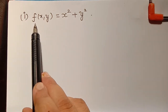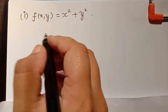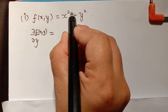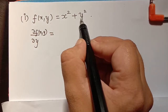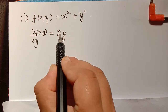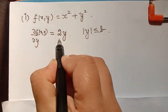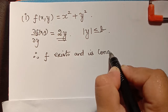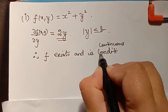Consider the first function: f(x,y) = x² + y². Let us find ∂f/∂y. Differentiating partially with respect to y, x² is treated as constant so its derivative is 0, and the derivative of y² is 2y. We observe that the partial derivative equals 2y, which is continuous since y is bounded — modulus of y ≤ b. Therefore, ∂f/∂y exists and is continuous, so the first condition is satisfied.